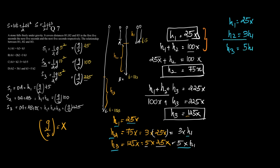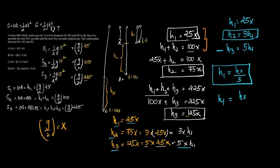So h2 equals 3·h1, which implies h1 equals h2/3. And h3 equals 5·h1, which implies h1 equals h3/5. Therefore h1 equals h2/3 equals h3/5, and the correct option would be option C.